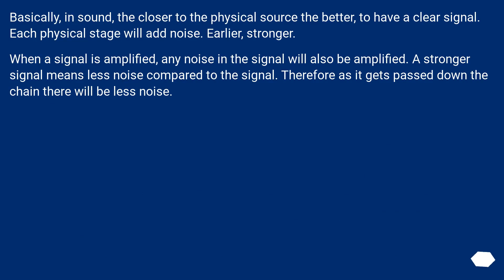Basically, in sound, the closer to the physical source the better, to have a clear signal. Each physical stage will add noise. When a signal is amplified, any noise in the signal will also be amplified. A stronger signal means less noise compared to the signal. Therefore, as it gets passed down the chain there will be less noise.